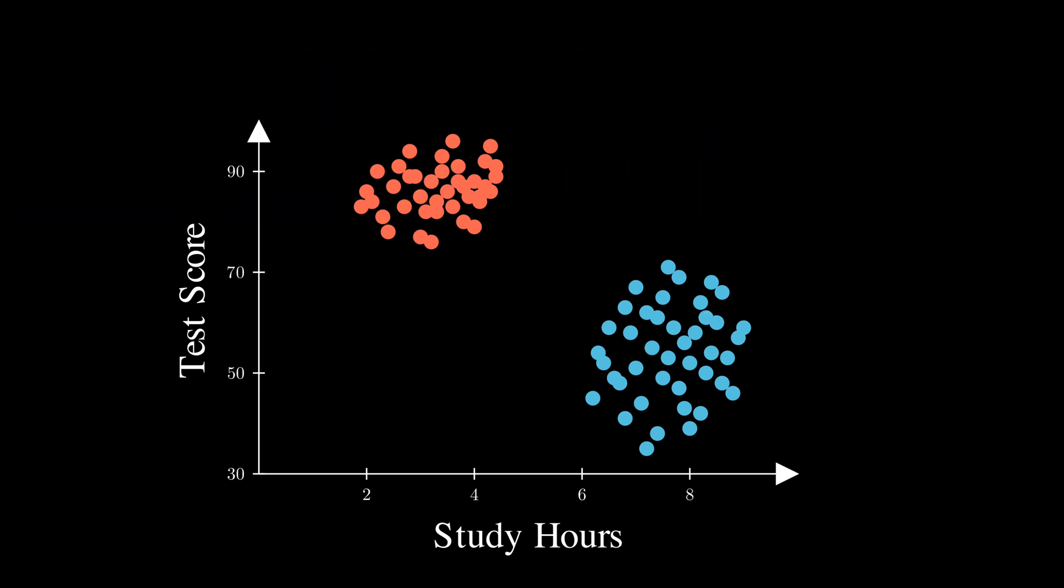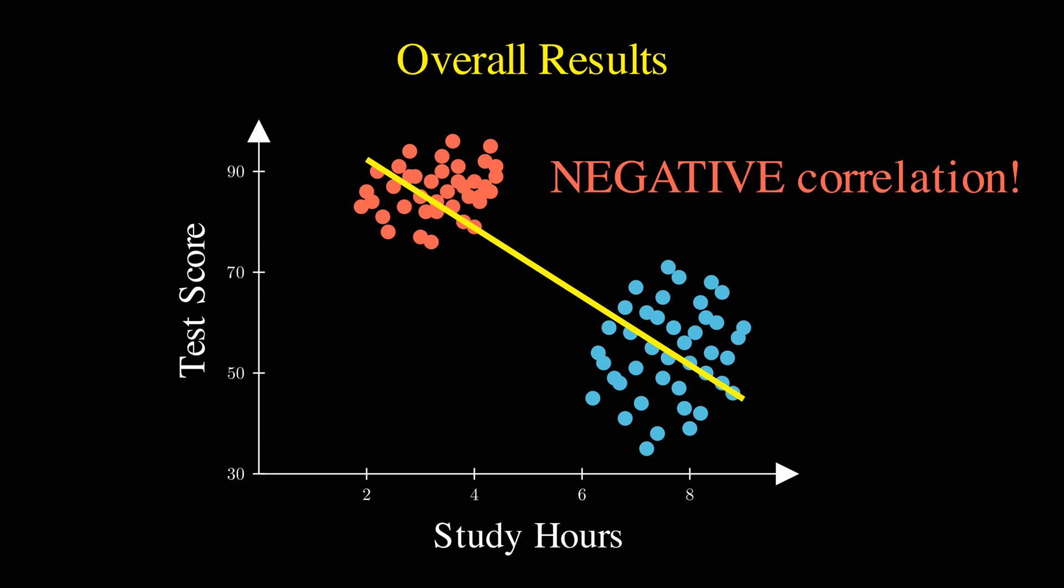When we ignore these groups and look at all the data together, plotting a single trendline across all students, we see something completely unexpected. The overall trendline slopes downward, showing a clear negative correlation that suggests students who study more actually score worse on tests. This seems completely backwards and contradicts what we just observed within each individual group.